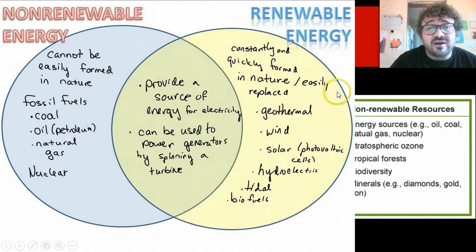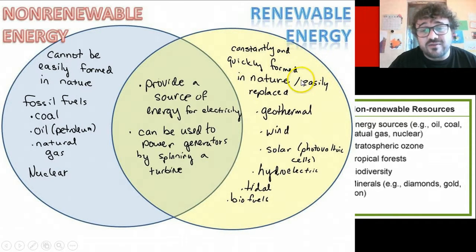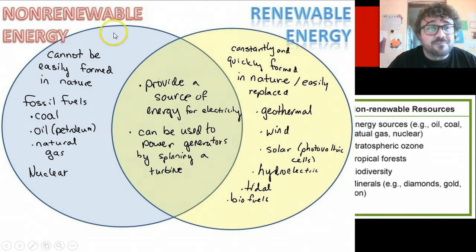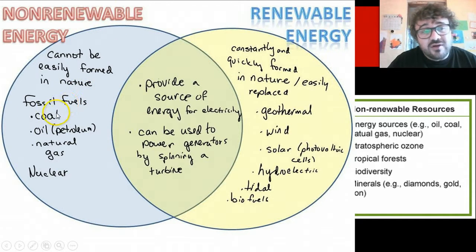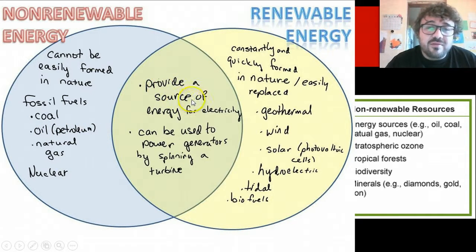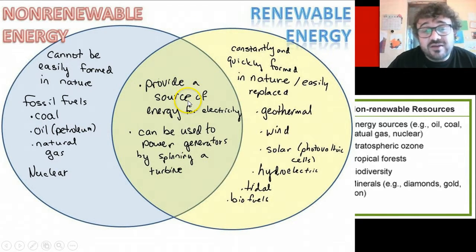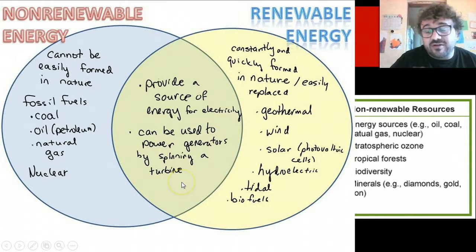We can look at a Venn diagram here. Renewable resources are constantly and quickly formed in nature. Non-renewable resources cannot be easily formed — fossil fuels, nuclear. There is some overlap: both can provide a source of energy and can be used to power generators by spinning a turbine. And that's kind of the key to electricity generation.